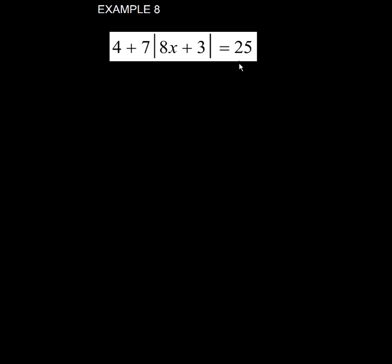In example 8, it's another multi-step problem because I have two things outside: 4 plus and 7 times.